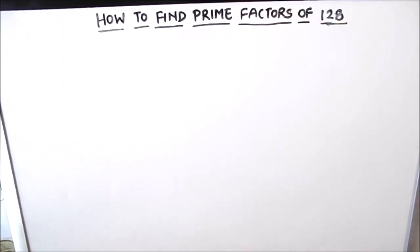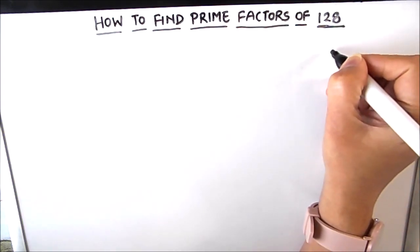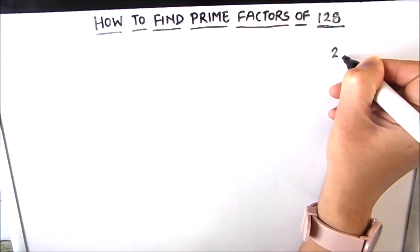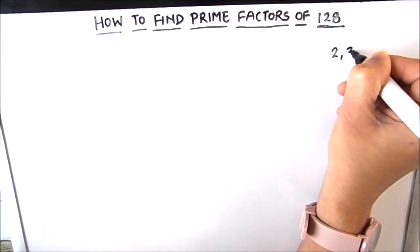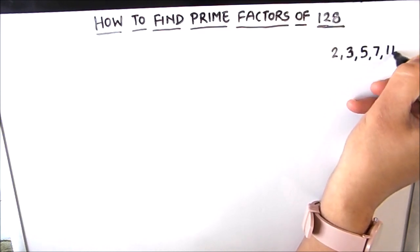Hello students. In this video we are going to learn how to find the prime factors of 128 using the prime factorization method. Prime factorization method is the method in which we find the prime factors of a number by dividing the number by prime numbers. I am going to write the first few prime numbers here on the right hand side so that it is easy for us in our division: 2, 3, 5, 7, 11.